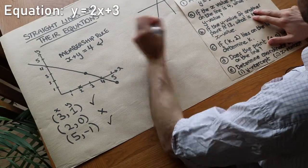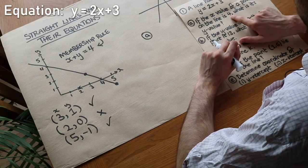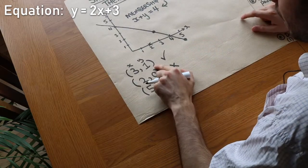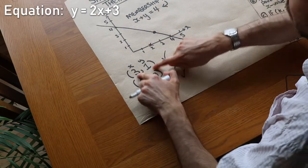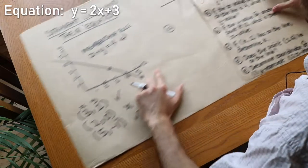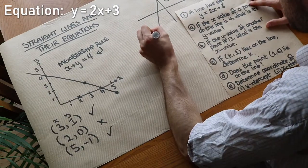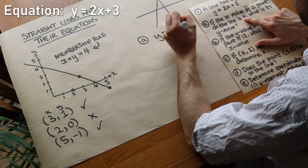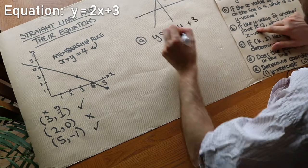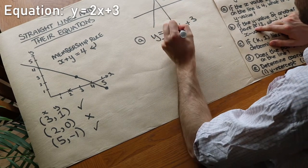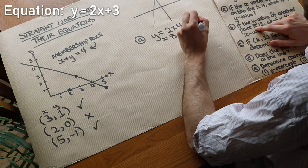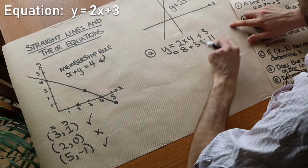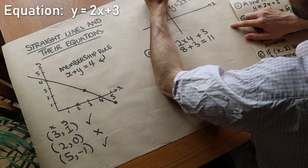The first question: if the x value of a point on the line is 4, what is the y value? If a point obeys the equation we can substitute the values in. So y is equal to 2 times 4 plus 3. 2 times 4 plus 3 is 8 plus 3, which equals 11. So when x is 4, the y value is 11, and we could put the point 4, 11 somewhere up here on this graph.